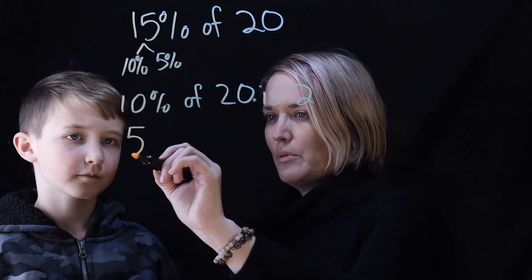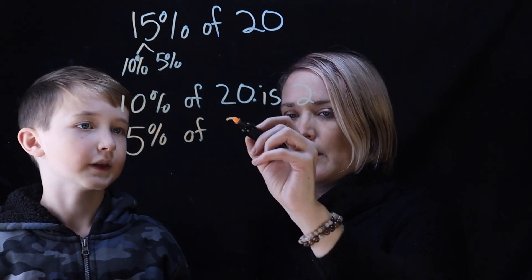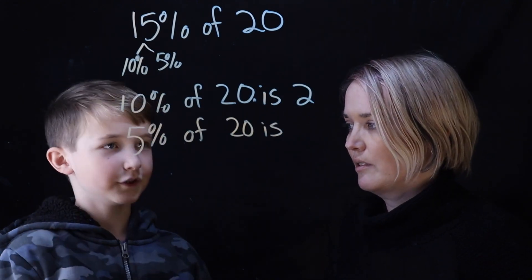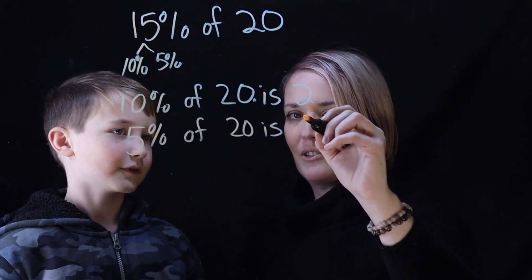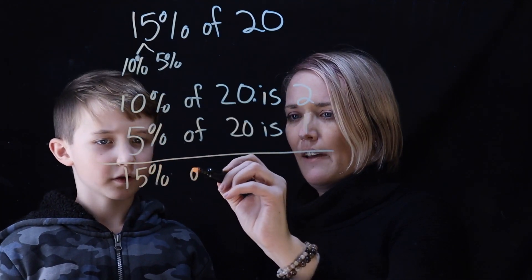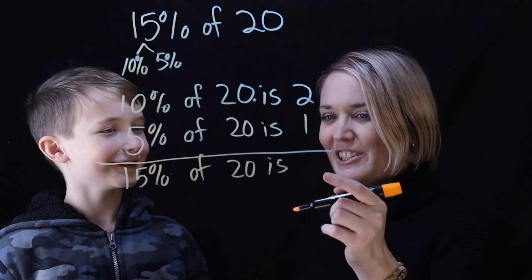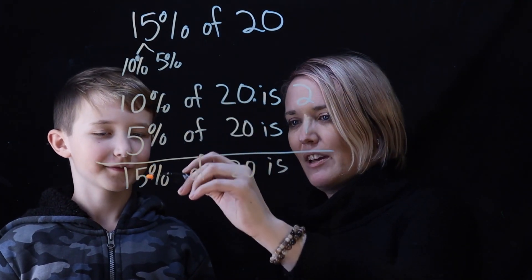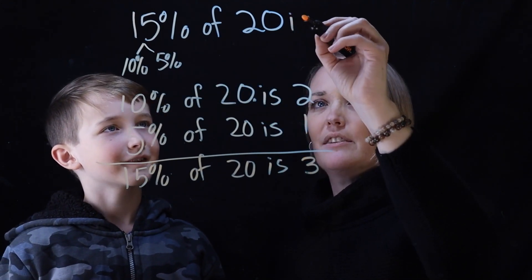That's only 10%, though, but we need a total of 15%, so you've got to find this 5% of 20. Now we already know that 10% is 2, so we just split it and get 1, because that's half of that. And then we add them together to get 15% of 20. This 15% of 20 is 3, because 10 plus 5 equals 15, and 2 plus 1 equals 3. So 15% of 20 is 3.